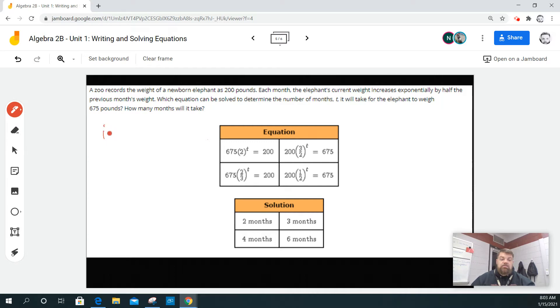The initial condition, that is 200. The elephant was 200 pounds when it was born. That's the initial condition. Now the growth rate is half.